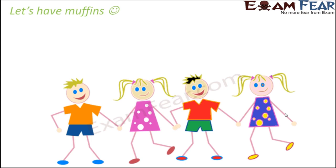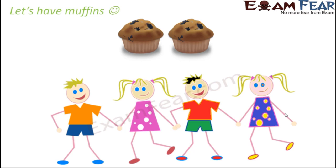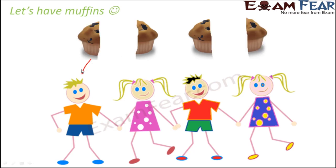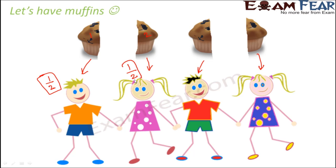Say there are four kids and you have two muffins. It wouldn't be nice to give one muffin to two kids and nothing to the others. So you divide each muffin into half and give half a muffin to each child. What fraction did each child get? They get one by two — one part out of two equal parts. This half is nothing but an example of a fraction.